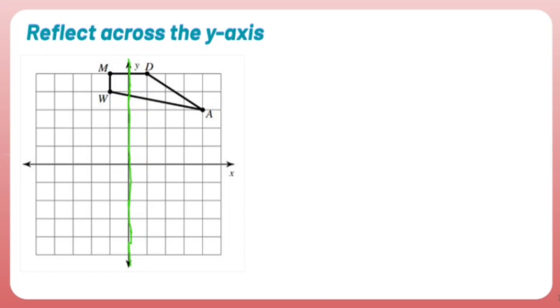The best way to do a reflection is you take each point one at a time and find out how far away it is from the mirror. So let's start with A because it's kind of like the clearest one that I can use. A appears to be 1, 2, 3, 4 units away from the mirror.